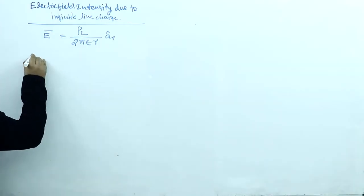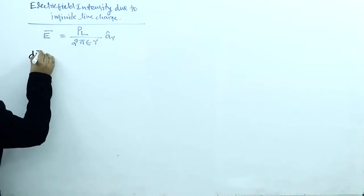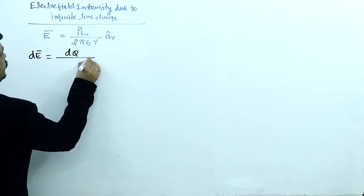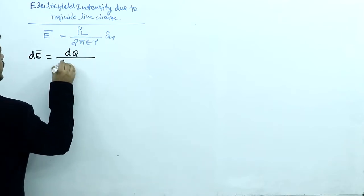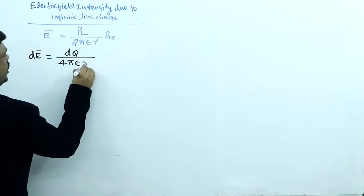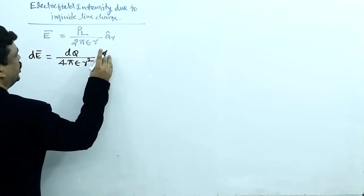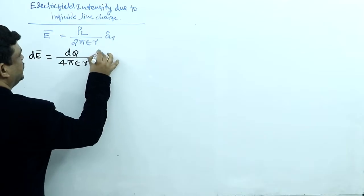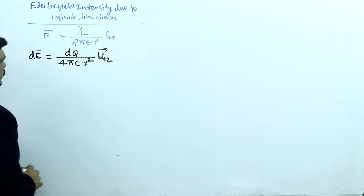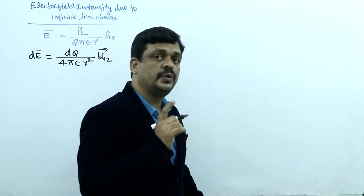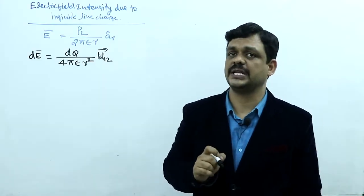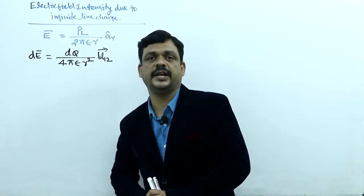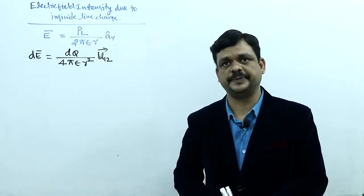dE is equal to dq divided by 4πε r² into the unit vector. This is the standard electric field intensity equation from Coulomb's law.